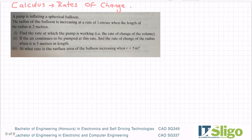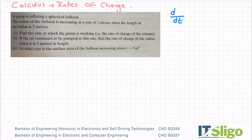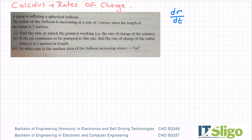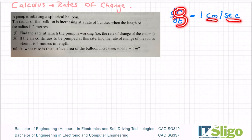This follows on from the other rates of change we did, so I'll repeat some of the important stuff here so you can see the links between the two questions. The radius of the balloon is increasing at a rate of one centimeter per second. When you see something is increasing, it means that it is with respect to time. So it's the rate of change of the radius over time. When it doesn't say with what it's changing with respect to, it is with time. You can also see that in the units — it's one centimeter per second. So that is the unit for your radius, and this is the unit for time. So the rate of change of the radius is increasing at a rate of one centimeter per second when the radius is two meters.